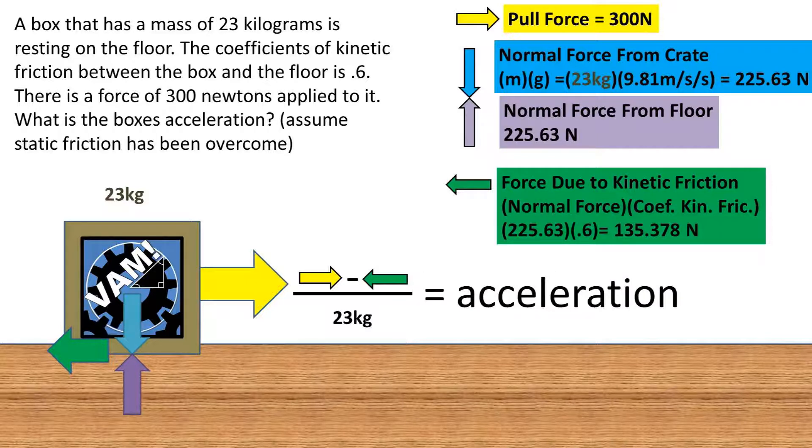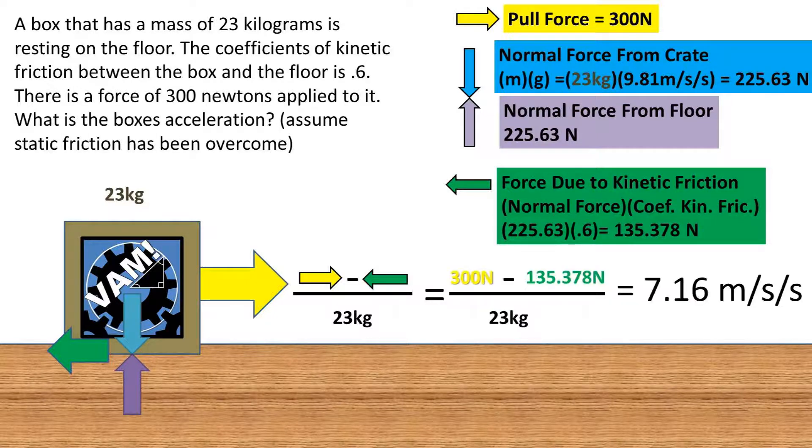Next, we will divide the net force by the mass of the crate to get the acceleration. Plugging in all of our numbers, we get an acceleration of the crate of 7.16 meters per second per second.